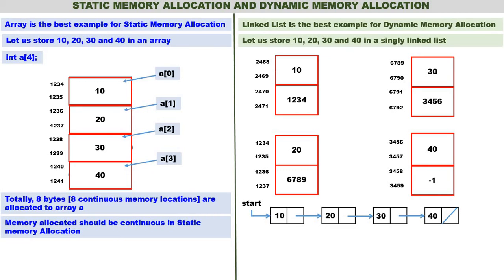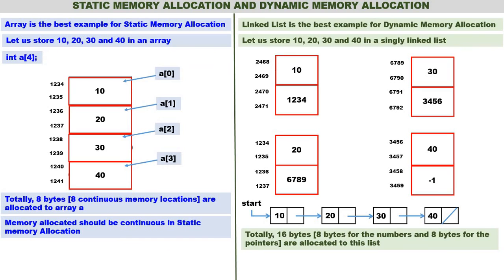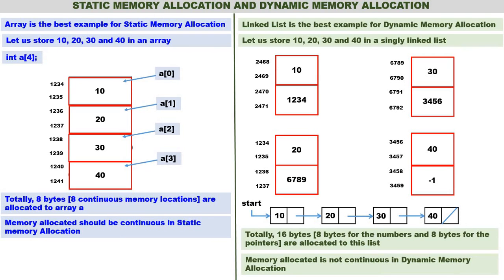This is similar to a treasure hunt game: after 10 we have the address of 20, at 20 we have the address of 30, and at 30 the address of 40. Totally 16 bytes are allocated — 8 bytes for the numbers and 8 more for the pointers, since each node requires 4 bytes (2 for the integer, 2 for the address).